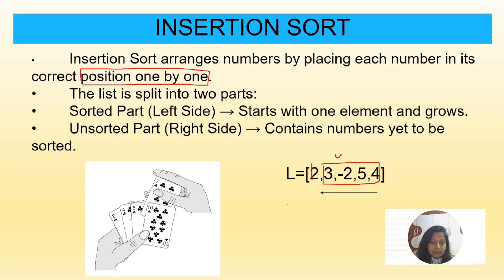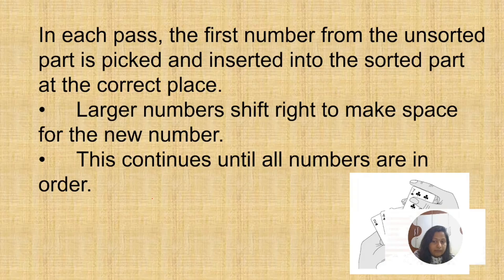I hope everyone is clear with insertion sort. The best example is taking cards. For example, if you already have 2, 4, 5, and 10 in your hand, and you take 7 from the bundle, you place it between 5 and 10 — that type of placing we call insertion. In each pass, the first number from the unsorted part is picked and inserted into the sorted part at the correct place. Large numbers shift right to make space for the new number, so the smallest element goes to the right place.